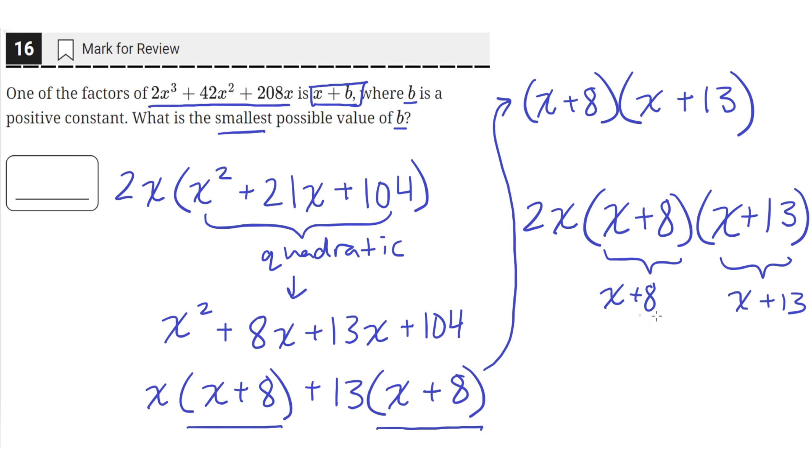So here we have x plus 8 as a factor and x plus 13. And the question asks us for the smallest possible value of b. So b can either be 8 or b can be 13. But we need the smallest possible value of b, so we'll choose 8 as our answer. So the answer is 8 for the smallest possible value of b.